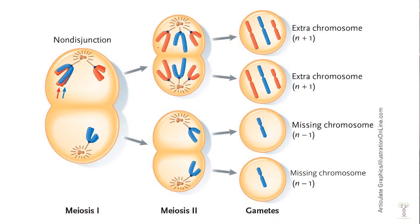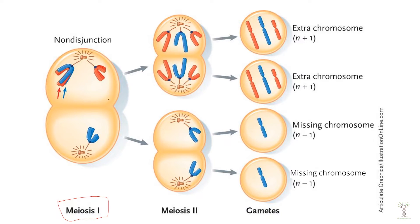In this diagram, we can see a non-disjunction occurring in the first meiotic division. Both sets of homologous chromosomes did not separate properly. Both of these homologous chromosomes went into the same cell.